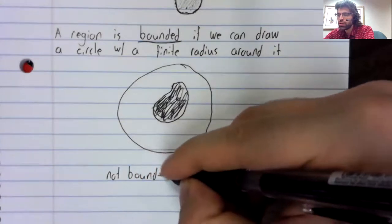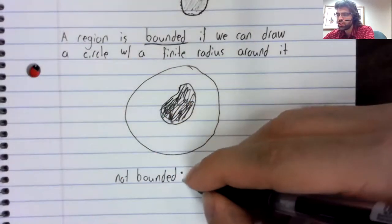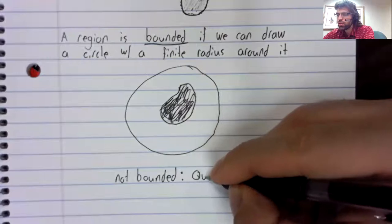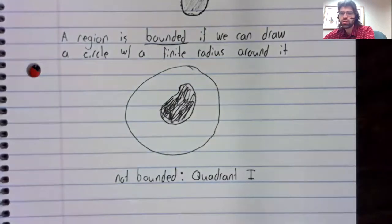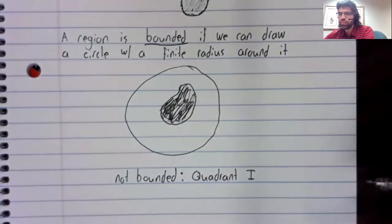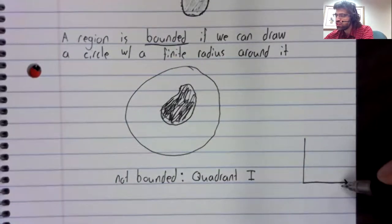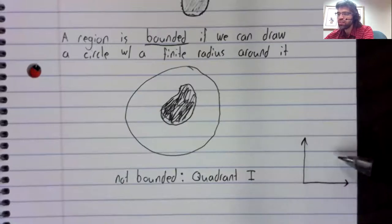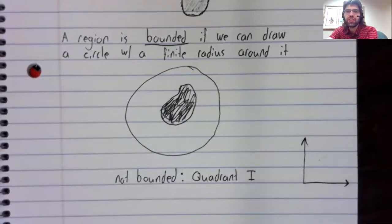By contrast, for a region of the plane that is not bounded, we could look at one of the quadrants. Say, the first quadrant. Obviously, this first quadrant extends infinitely up and to the right. There is no way we can draw a finite circle around this infinite region.